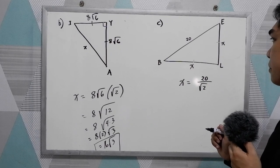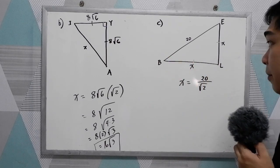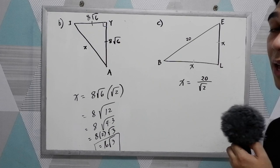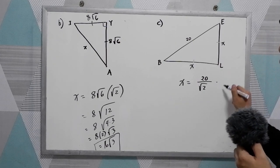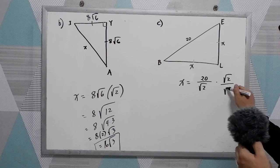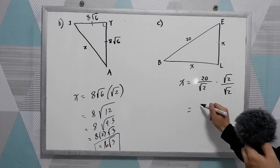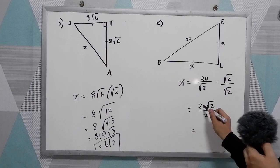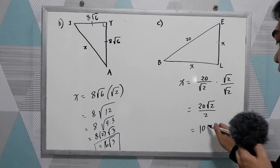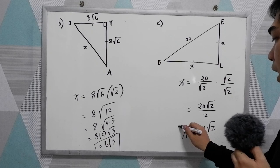If the hypotenuse is missing, multiply by √2. If the legs are missing, divide by √2. We rationalize by multiplying by √2/√2. So we have 20√2 over 2. 20 divided by 2 is 10, so X equals 10√2.